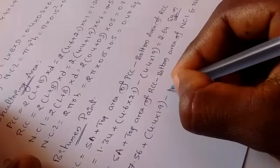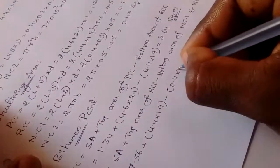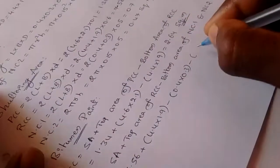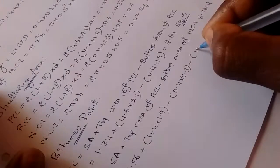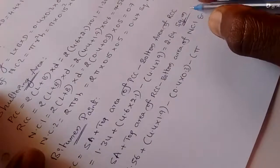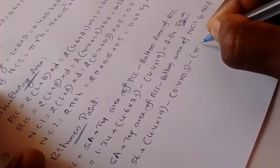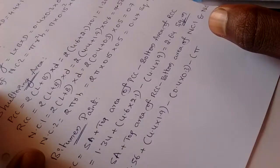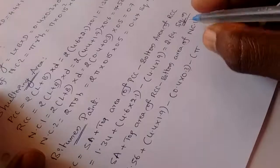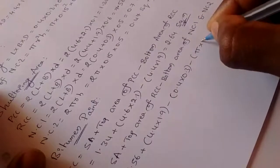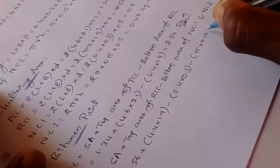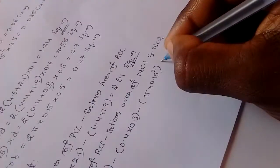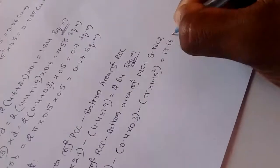Bottom area of neck column 1 is 0.4 into 0.3 m². For neck column 2, since it is a circular column, the area is π R squared, where R equals 0.15 meters. Total RCC bitumen paint area is 13.66 square meters.